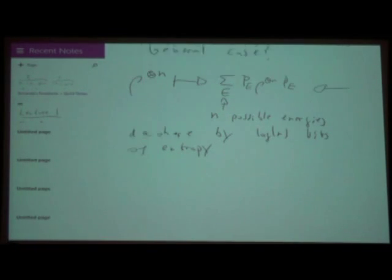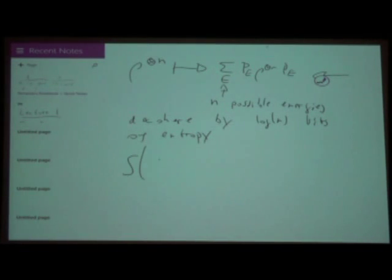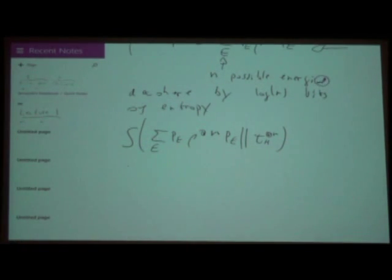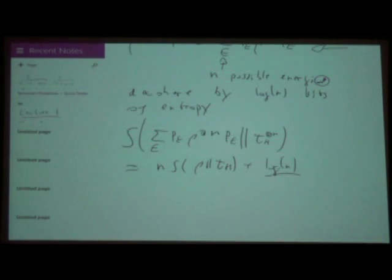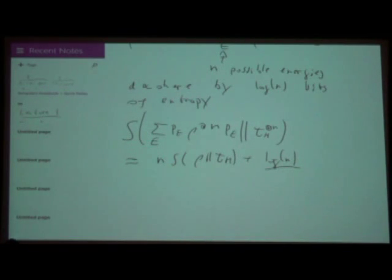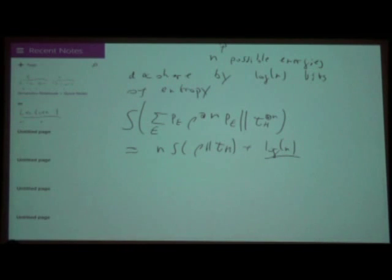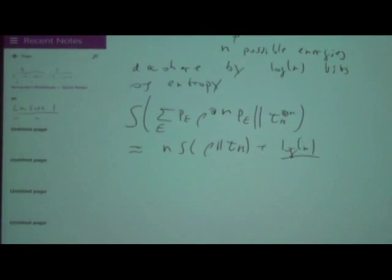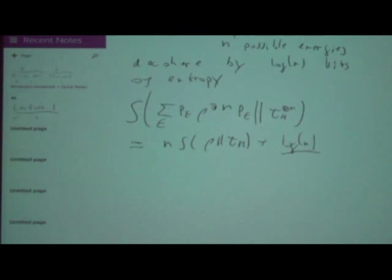The important lesson is that because you have many copies, coherence does not matter — you can just destroy the coherences. The reason is that you have just n different energy levels when you have n copies, but there is a huge degenerate subspace in which you can operate. For a single copy things would be different, but asymptotically coherence is irrelevant.